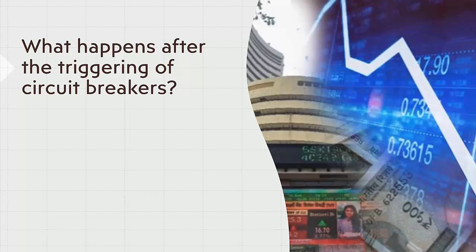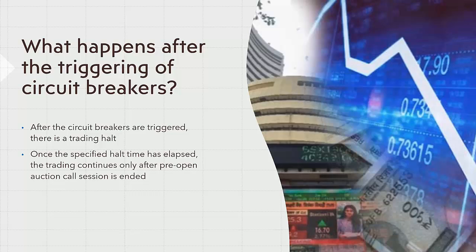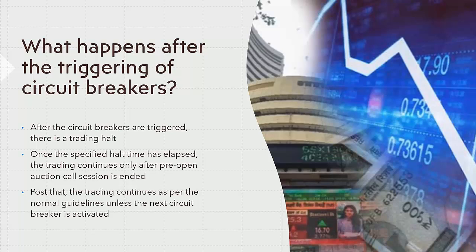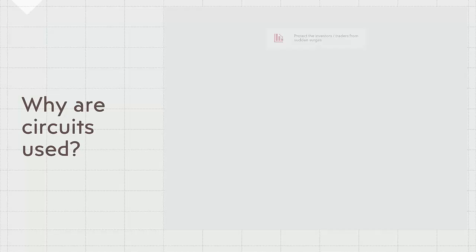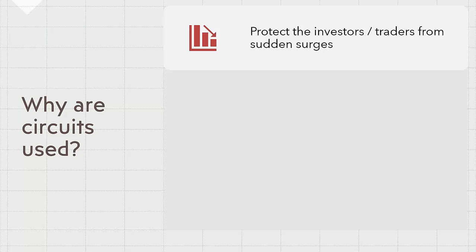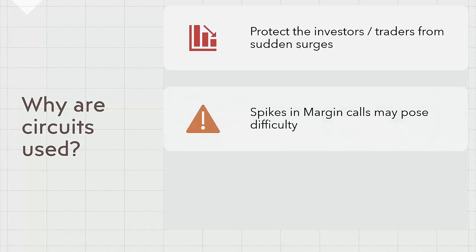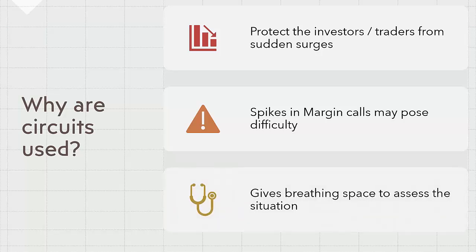Now let us have a look at what happens after the triggering of circuit breakers. After the circuit breakers are triggered, there is a trading halt, and once the specified halt time has elapsed, trading continues only after the pre-open auction call session has ended. Post that, trading continues as per the normal guidelines unless the next circuit breaker is activated. Circuit breakers are used to protect investors or traders from sudden surges in price, either upward or downward, which could result in a spike in margin calls — a big problem for leveraged traders. A stoppage in the trading session gives breathing space to market participants to assess the situation and take rational trading decisions rather than reacting to herd mentality.